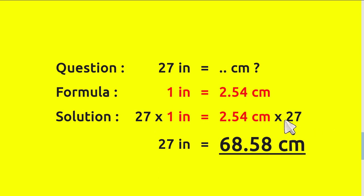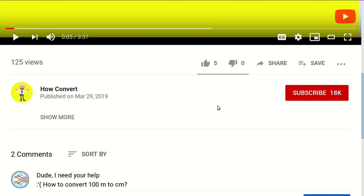Which is why we have 27 here and 27 here. Okay, now 27 times 1 equals 27, and 2.54 times 27 equals 68.58 centimeters. And that's the answer. Thank you for watching.